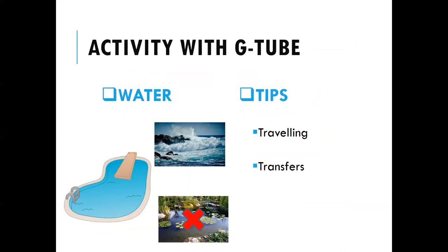After healing, you can return to all normal activity, including showering and getting your G-tube wet — even swimming in pools and oceans is fine. Ponds and lakes are not recommended due to bacteria. Travel is also very safe with no restrictions; your ALS team can provide a letter of medical necessity for TSA if you need to bring supplies and formula in your carry-on. Transfers can be trickier depending on where your G-tube is placed, so always let caregivers know. You can tuck the tube using an abdominal wrap, clothing, or gauze tape.